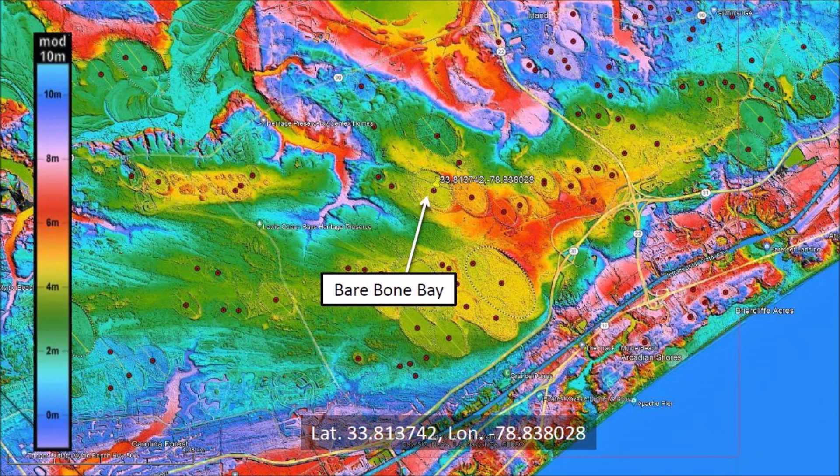Welcome to another edition of the Carolina Bay of the Day, where we study the secondary impacts made by the glacier ice boulders that were ejected by an extraterrestrial impact on the Laurentide Ice Sheet. There is a link to the LiDAR visualization tool for Google Earth by Michael Davias in the description of the video.